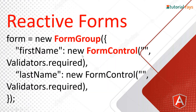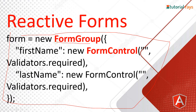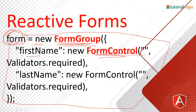Now let's see the code to understand what this means. This whole form is FormGroup — we are creating an instance of it with the new keyword from the FormGroup class. Inside this, there is first name as a FormControl. So FormGroup is the whole form, and each individual field like first name and last name are FormControls.